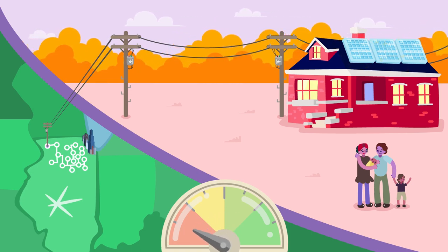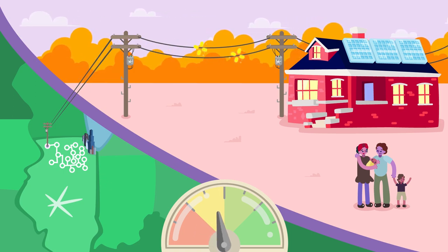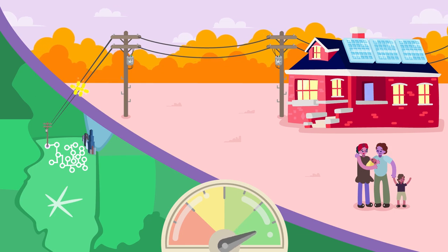Some days, your solar panels will make less energy than other days. But that's okay. ComEd will make sure your home has all the electricity it needs when it's connected to the ComEd smart grid.